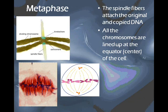The next stage is metaphase. In metaphase, the spindle fibers attach and the chromosomes line up along the center, or the equator of the cell. Just like the Earth has an equator around the center, the cell has an equator around the center where the chromosomes line up.